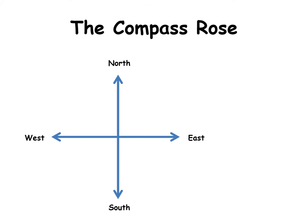For GCSE geography we actually need eight different directions. It's quite easy to remember what the in-between ones are because we just combine the directions on each side. So between north and east comes northeast, between south and east comes southeast, between south and west comes southwest, and between north and west comes northwest. Sometimes people forget which comes first — the north or the east.